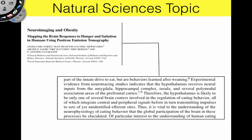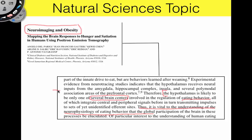Now let's look at an example from the natural sciences — the discipline is neurosciences. This is a paper about neuroimaging and how it can be used to study obesity or the behaviors that may lead a person to become obese. The claim the authors are making is about the hypothalamus and its interaction with other centers of the brain in regulating eating behavior. They believe that to understand the neurophysiology of eating behavior, you need to understand how those brain centers interact with each other.